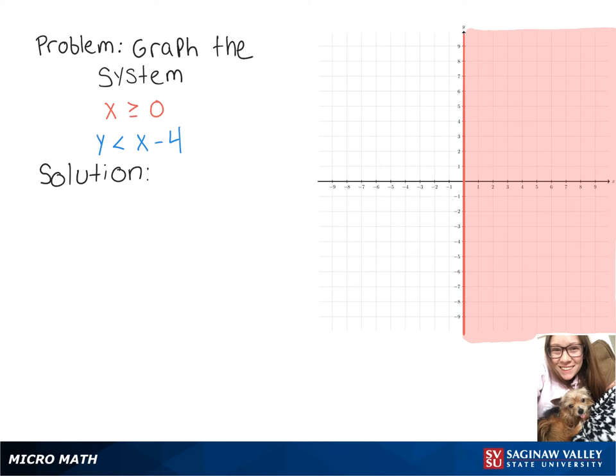So now our other inequality, we'll graph just as you would a line in y equals mx plus b form. This line, however, is going to be a dashed line because it's strictly less than, and then we're going to shade everything below that line.